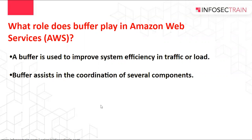What role does a buffer play in Amazon Web Services? A buffer is used to improve system efficiency in traffic or load. A buffer assists in the coordination of several components, maintains harmony between those components, and causes them to work at the same speed to complete the operation faster.